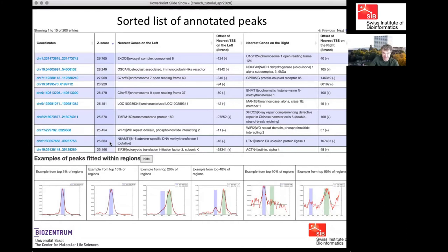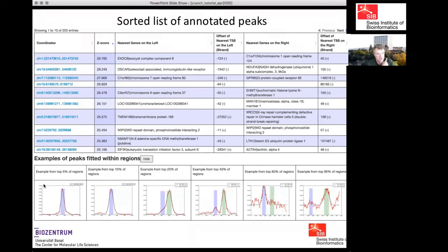To give an idea of peak quality, CRUNCH provides six examples of read density profiles and their fits — from the top 5% of regions with very strong signal all the way down to examples that were statistically significant but only marginally enriched. You can see that profiles get much noisier as peak height decreases, giving you a sense of the quality range across your predicted peaks.